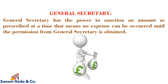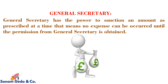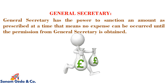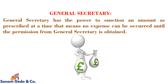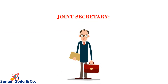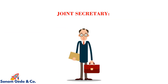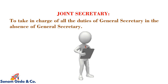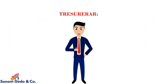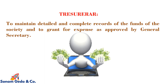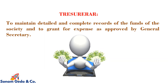General secretary: the general secretary has the power to sanction an amount as prescribed, meaning no expense can be incurred until permission from the general secretary is obtained. Joint secretary: to take charge of all the duties of the general secretary in the absence of the general secretary.